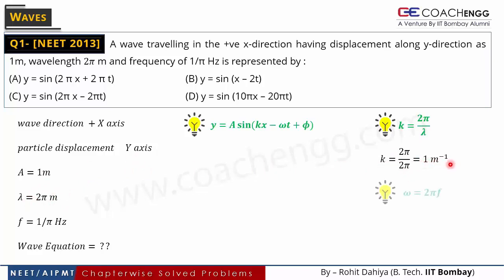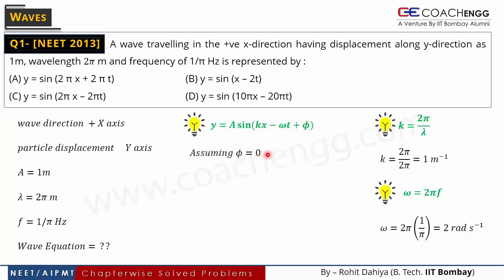Since lambda is given as 2π in the question, k comes out to be 1 per meter. Similarly, omega = 2πf, where f is the frequency of the wave. The frequency is given as 1/π hertz, so omega = 2π × (1/π) = 2 radians per second. The phase constant phi has no discussion in the data, so we assume phi = 0. With amplitude A = 1 meter, k = 1, and omega = 2, the equation becomes simply y = sin(x − 2t).